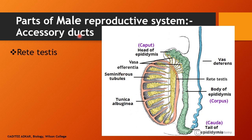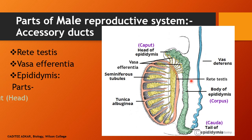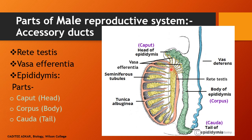Let us now understand the accessory ducts of the male reproductive system. The accessory ducts will help in transportation of the sperms produced by the testis. The first one is the rete testis. The seminiferous tubules inside the testis converge on the posterior surface of the testis and form a network of fine tubules. This network is known as the rete testis.